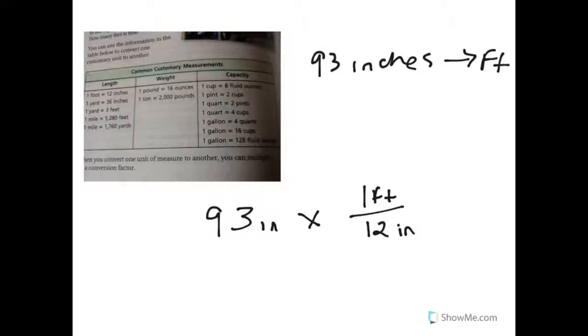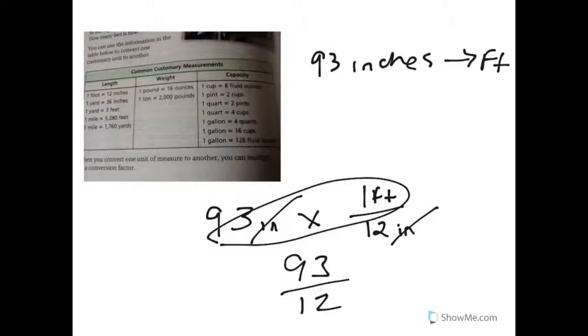So let's say we wanted to convert 93 inches to feet. We want to know how many feet 93 inches is. Well, we're gonna take 93 inches, multiply that by—we know that one foot is 12 inches. So we do the multiplication. The inches cancel each other out, so we end up with 93 times 1. Because we're multiplying by a fraction, 93 denominator stays the same.